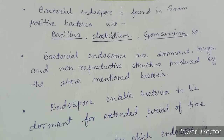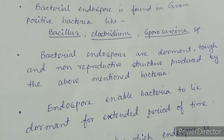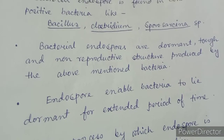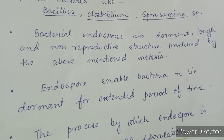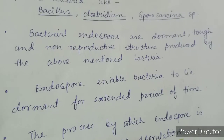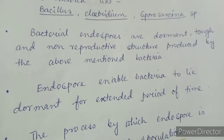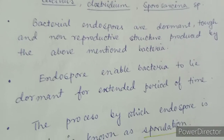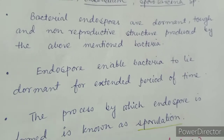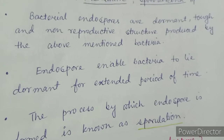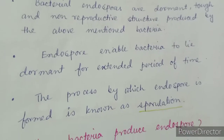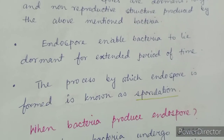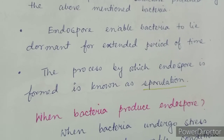Bacterial endospores are very dormant, tough and non-reproductive structures produced by the above-mentioned bacteria. They can help the bacteria to survive any stressed condition. Endospores enable bacteria to lie dormant for extended periods of time. The process by which an endospore is formed is known as sporulation.